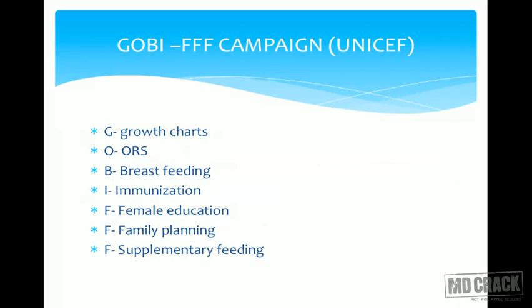There is a very famous campaign called the GOBIFFF campaign: G for growth charts, O for ORS, B for breastfeeding, I for immunization, F for female education, the second F for family planning, and the last F for supplementary feeding. You should know this because it is unique and can be asked in the examination.